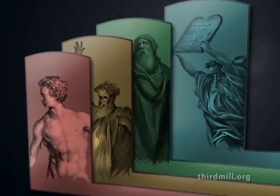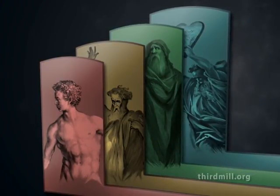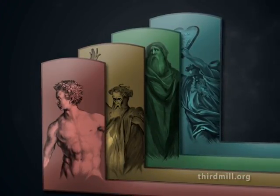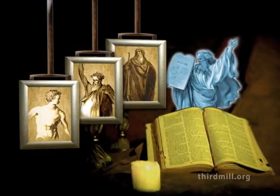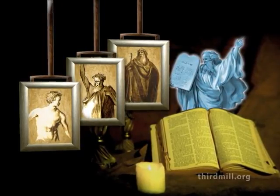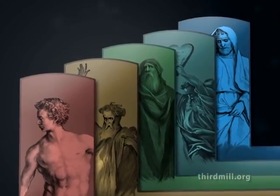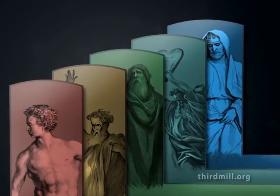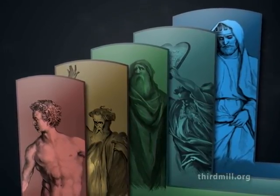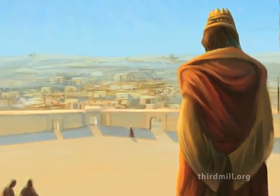Moses' covenant of law reached back to Adam's foundation, Noah's stability, and Abraham's promises. But Moses applied these earlier theological structures to the Israelites living in his day in very careful ways. The policies of earlier covenants had to be seen in the light of specific regulations for worship and social life revealed in God's law at Sinai. David's covenant of kingship built on Adam's foundation, Noah's natural stability, Abraham's promises, and Moses' law. But once David's dynasty had been established, all of these previous theological structures had to be seen in the light of the centrality of David's kingship, the city of Jerusalem, and its temple.